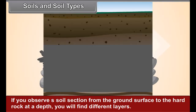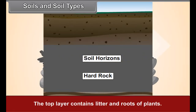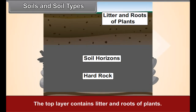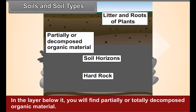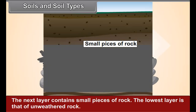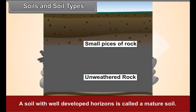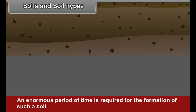If you observe a soil section from the ground surface to the hard rock at depth, you will find different layers called soil horizons. The top layer contains litter and roots of plants. In the layer below it, you will find partially or totally decomposed organic material. The next layer contains small pieces of rock, and the lowest layer is that of unweathered rock. A soil with well-developed horizons is called a mature soil, and an enormous period of time is required for the formation of such a soil.